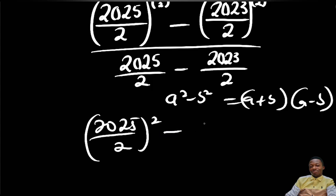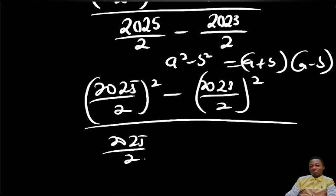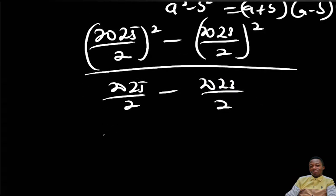R squared minus 2023 divided by 2 r squared, and then divided by 2025 divided by 2 minus 2023 divided by 2. So we apply our difference of two squares. So we have 2025 divided by 2